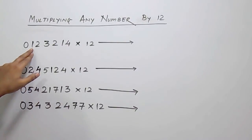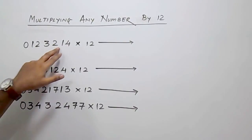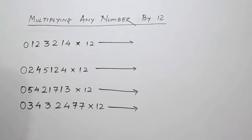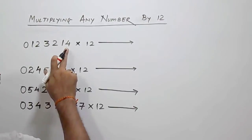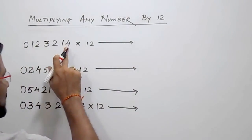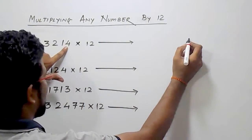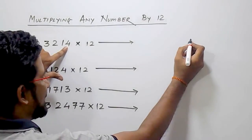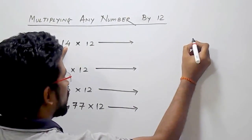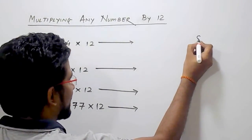For example, you want to multiply 1, 2, 3, 2, 1, 4 by 12. What you have to do here is start from the last digit. Double this digit — here it is 4, so 4's double is 8.